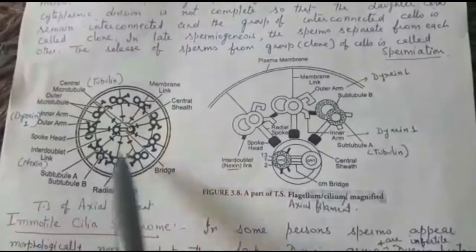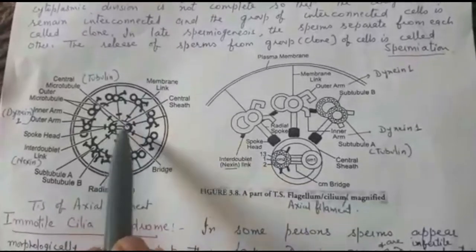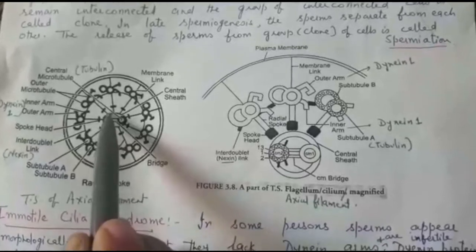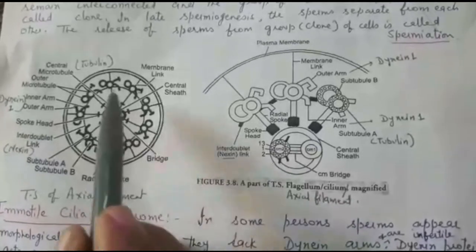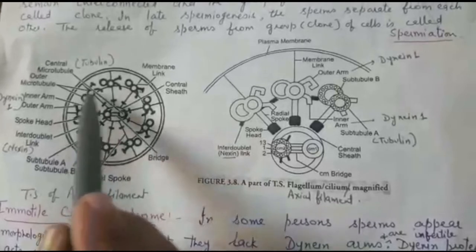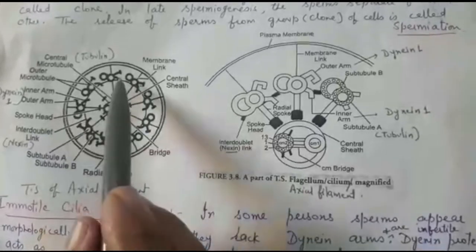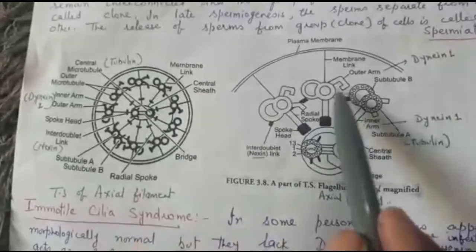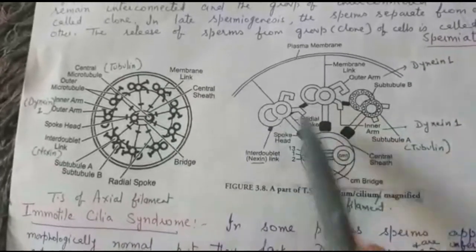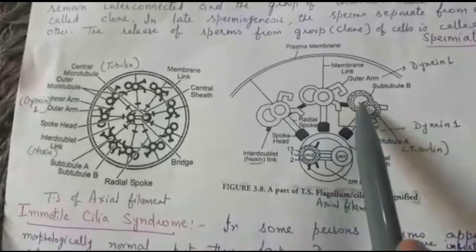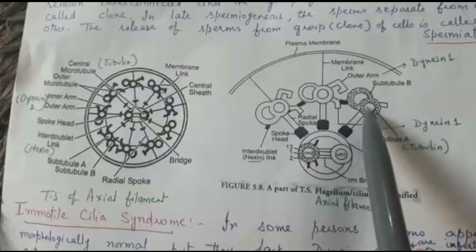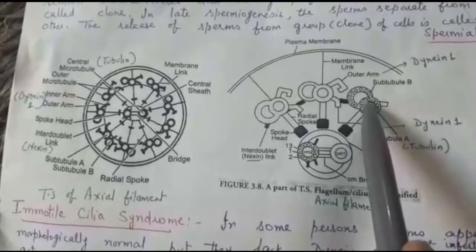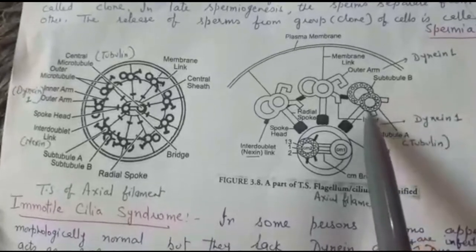The axial filament has a nine-plus-two arrangement of microtubules, as studied in lower classes. There are two singlets in the center connected by a double bridge and covered by a central sheath, and there are nine doublets around the central singlets. Each doublet means each is having two sub-tubules.